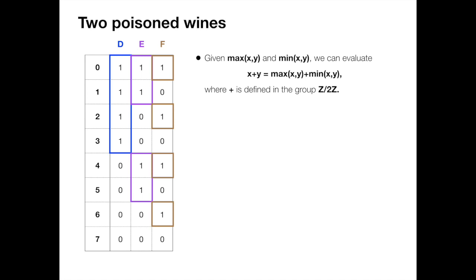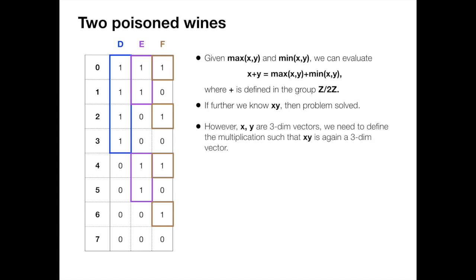So conceptually, if we have x plus y, and if in the addition we have x times y, then we can solve a quadratic equation to find out x and y. But we need to be a bit careful about what we mean by x times y, because x and y are both three-dimensional vectors here. And we need to define the multiplication such that x times y is again a three-dimensional vector.